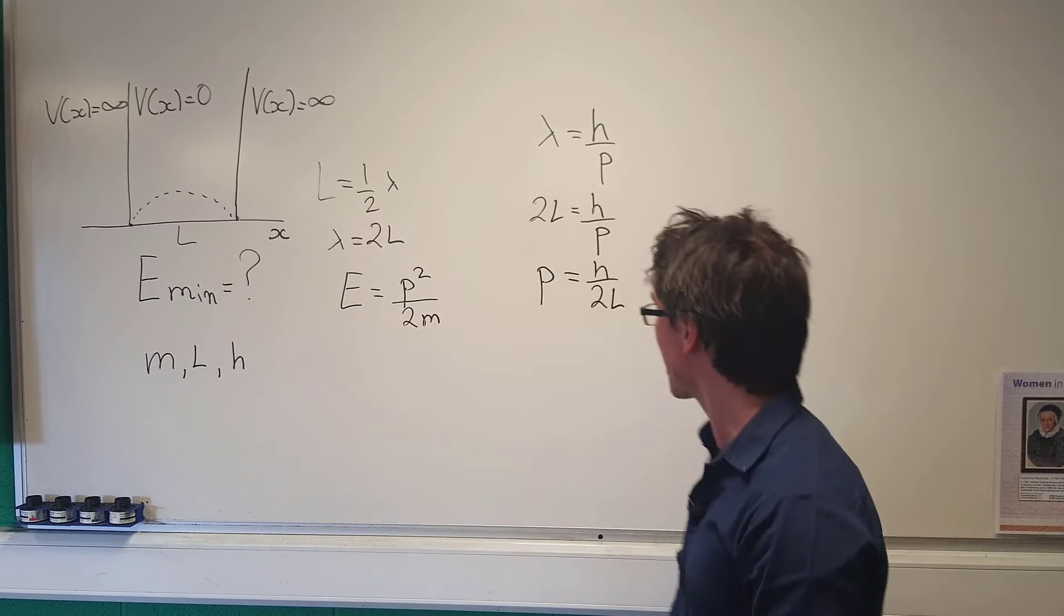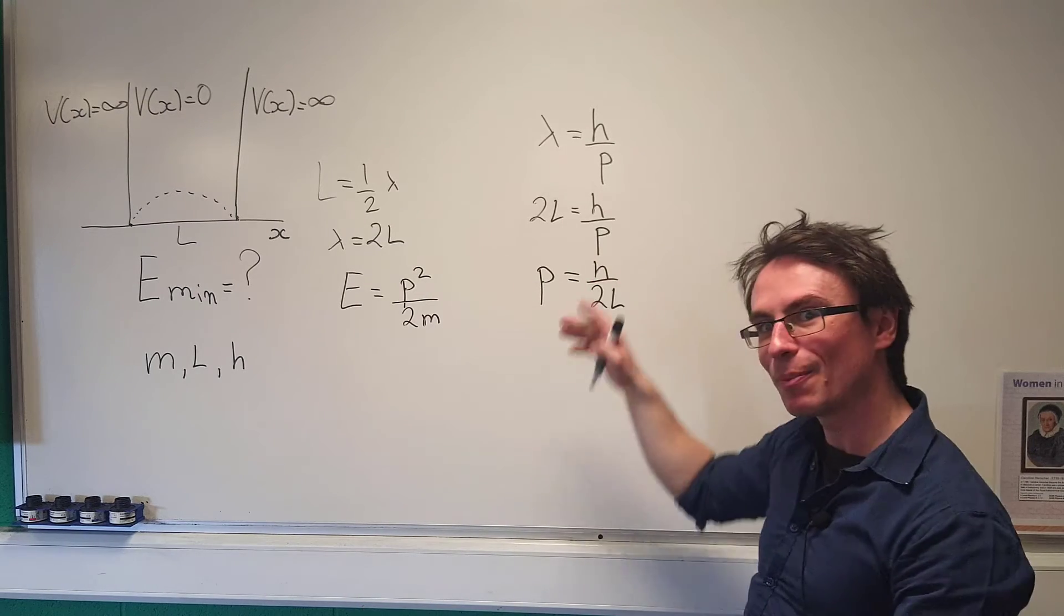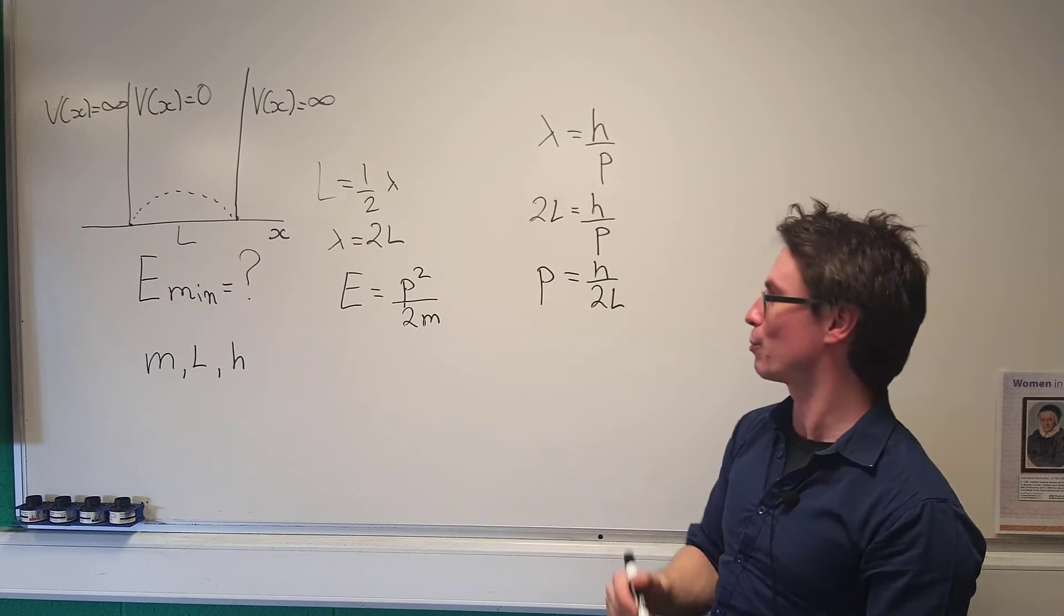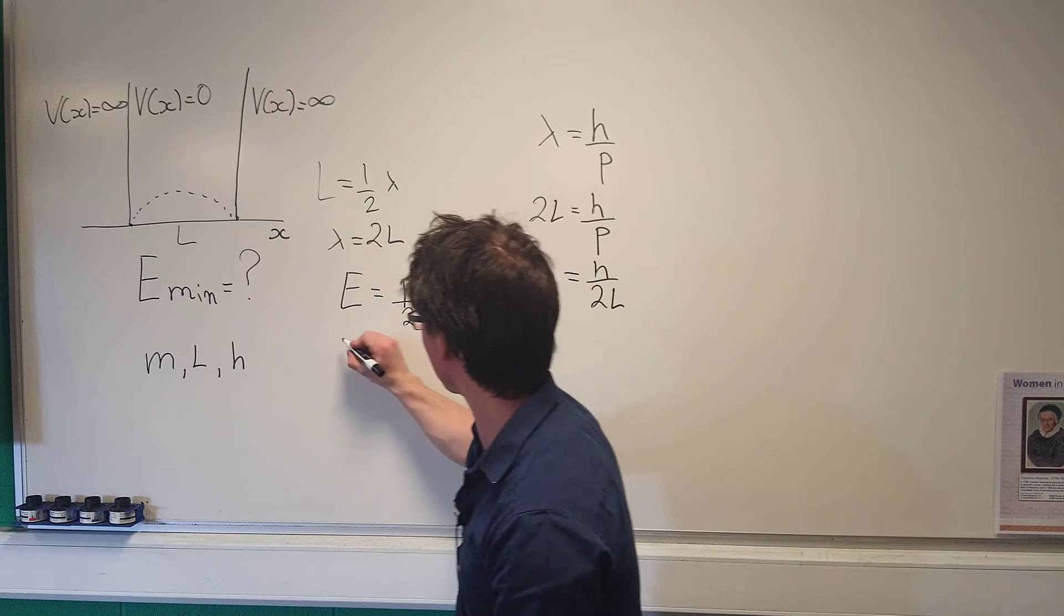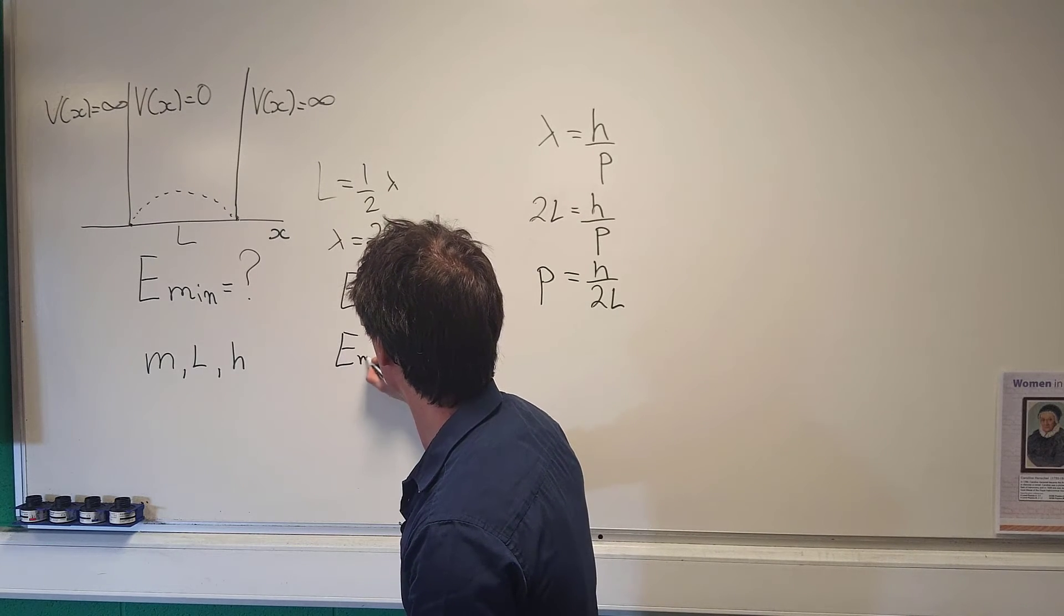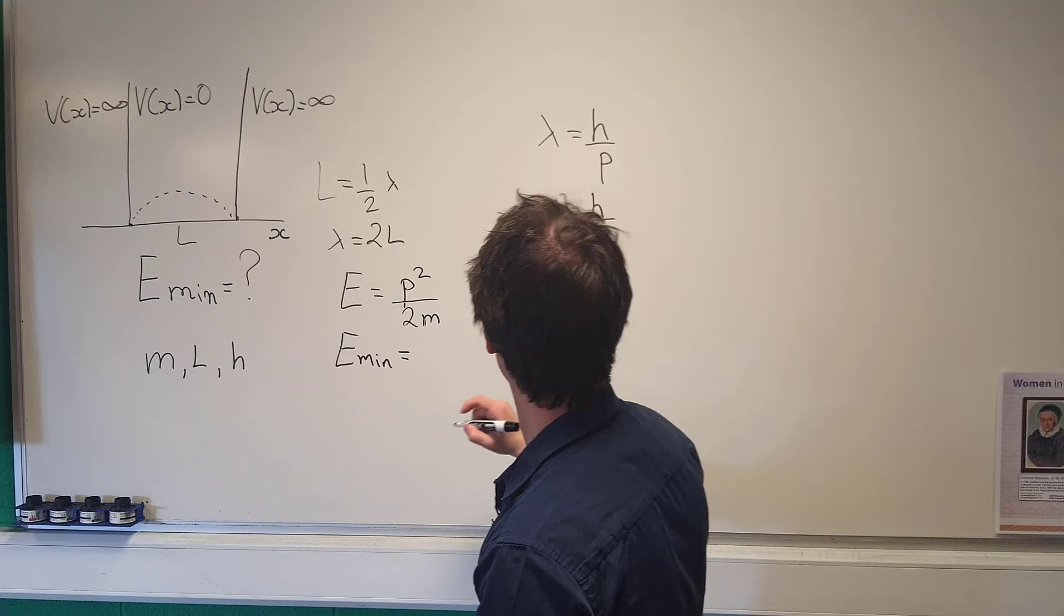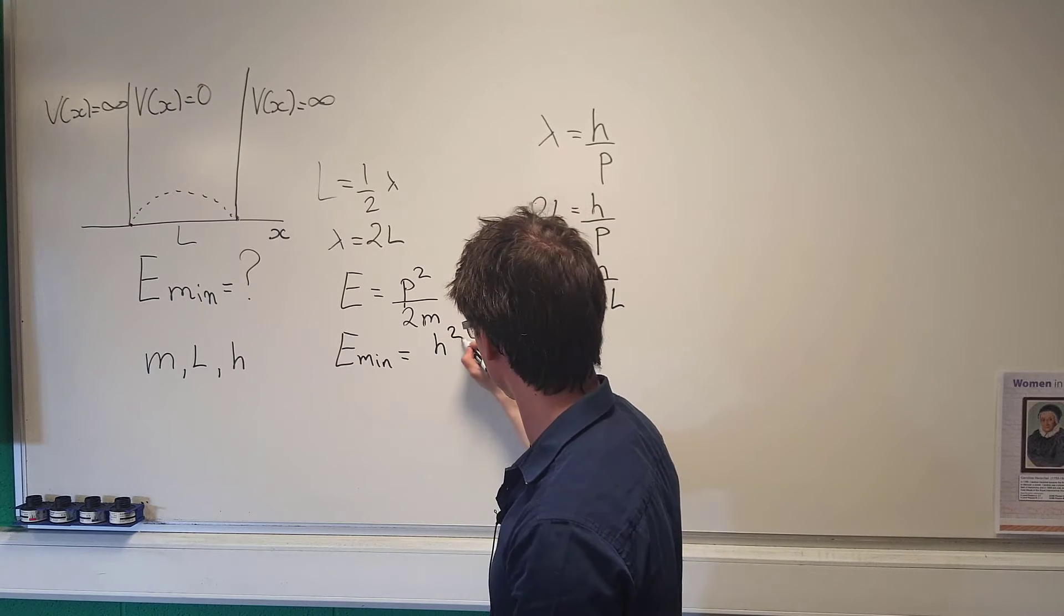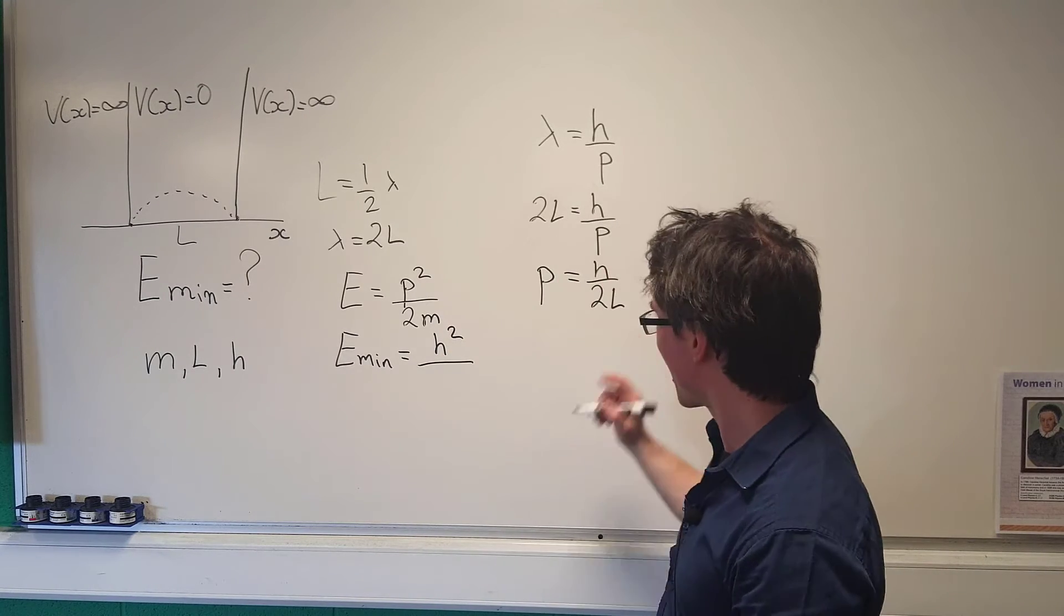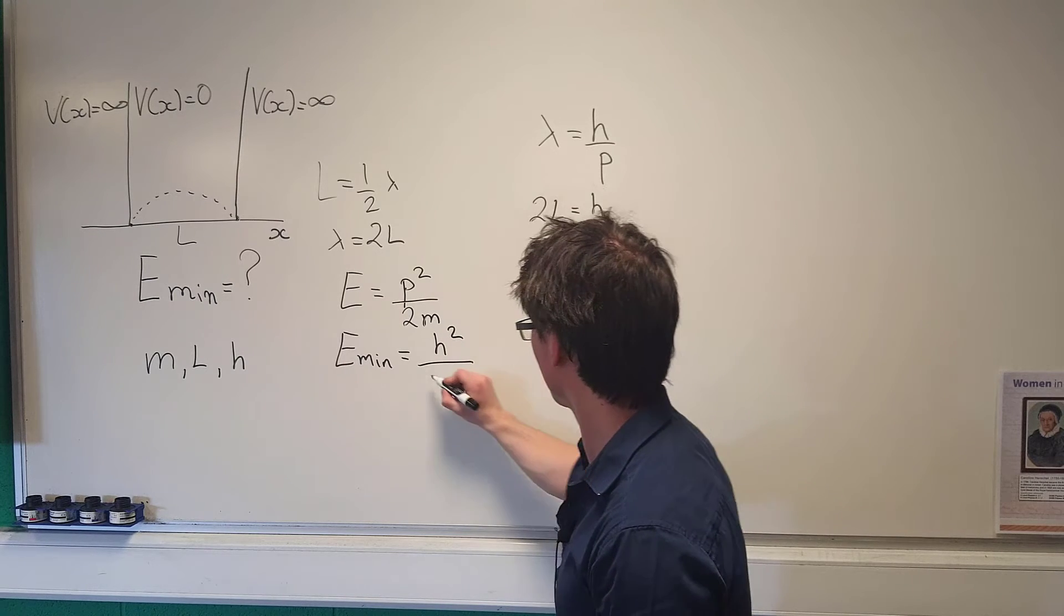If this here is the minimum energy, the momentum will be given by this expression with this de Broglie wavelength, meaning that E minimum will be given by p squared, which is h squared over 2L squared, which is going to give us 4L squared times 2m.